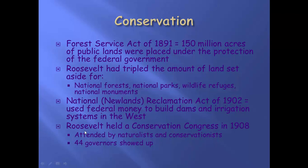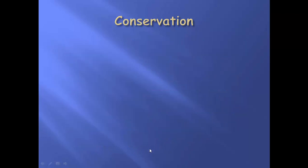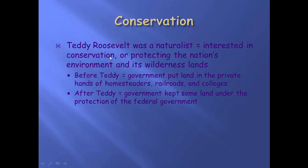He also got a bunch of states together to discuss conservation. He held a conservation congress in 1908, right before he left the presidency — a bunch of naturalists, conservationists, and 44 governors showed up to discuss how we're going to handle our land. Before Teddy, the government was giving lands to private people, farmers, businesses, railroads, and colleges, and they were using that land. After Teddy, the new approach is the federal government takes some land and keeps it — protected by the federal government.